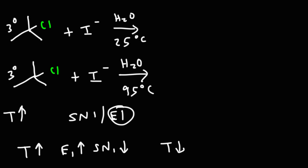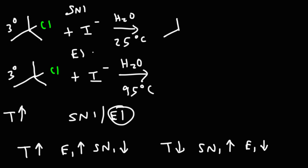As we decrease the temperature, we get more of the SN1 product and less of the E1 product. So high temperatures favor the E1 reaction and low temperatures favor the SN1 reaction. Therefore, the first example will proceed via the SN1 mechanism and the second example will proceed via the E1 mechanism.